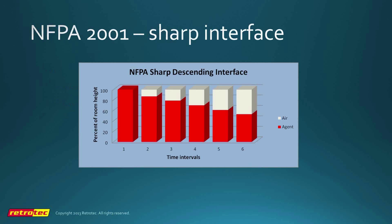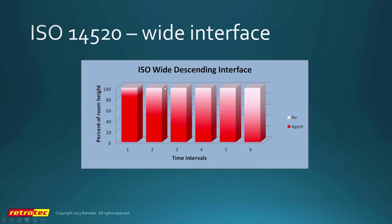The NFPA sharp interface model shows air above and agent below with a very simple transition over time. With the ISO wide descending interface, the concentration goes from 0% to 10% agent, and as the agent drops out the interface gets wider and wider. However, we discovered this doesn't actually happen — the interface goes to a characteristic thickness of about a quarter meter for helicarbons to about a meter for inerts, and then stays there; sometimes the interface can even get thinner as it drops. Our assumptions were incorrect, and new equations accepted by the ISO committee — calling it the 'thick interface' instead of the 'wide interface' — will find their way into the next edition of the ISO standard.